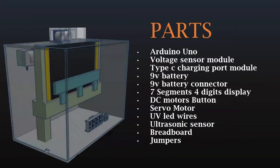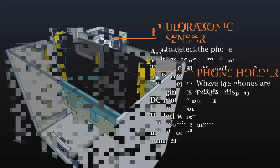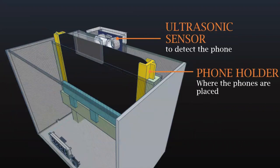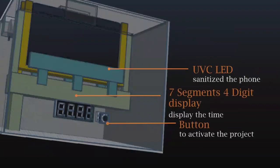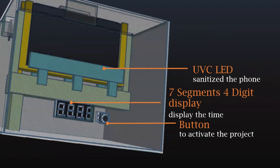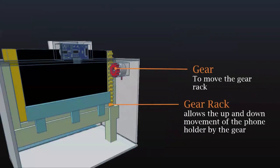These are the components we use for building our device. The ultrasonic sensor is to detect the phone, and the phone holder is where the phone is placed. The UVC LED is to sanitize the phone, and a 7-segment 4-digit display shows the time. The button is to activate the process. The gear is to move the gear rack, and the gear rack allows the up and down movement of the phone holder.